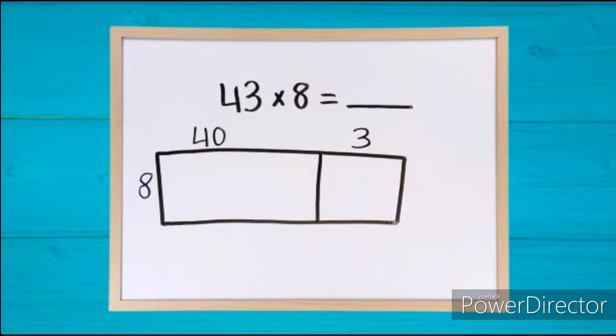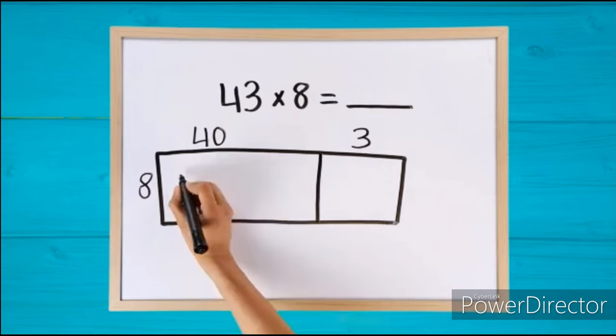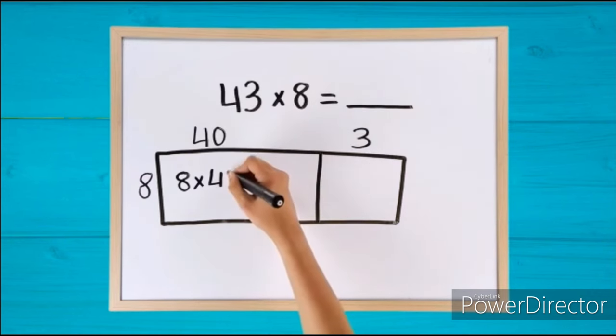Write the products in each of the squares. 8 times 4 is 32. Since this is in the 10 spot, we put a zero on the end to make 320.